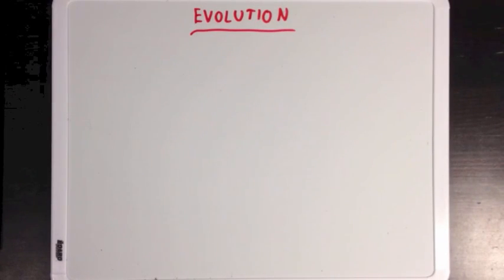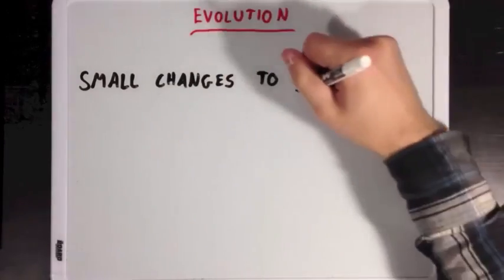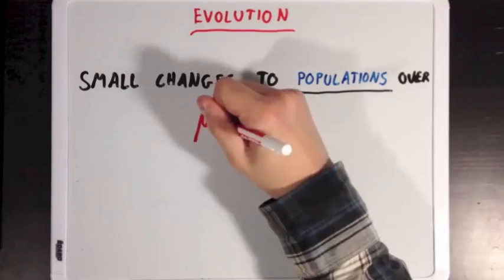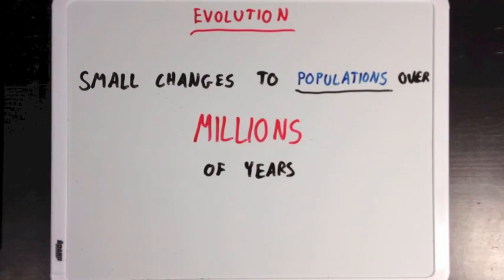Evolution is a process that occurs to populations of an organism, not individual members. And it occurs over huge amounts of time, and we're talking millions and millions of years, for even small changes.